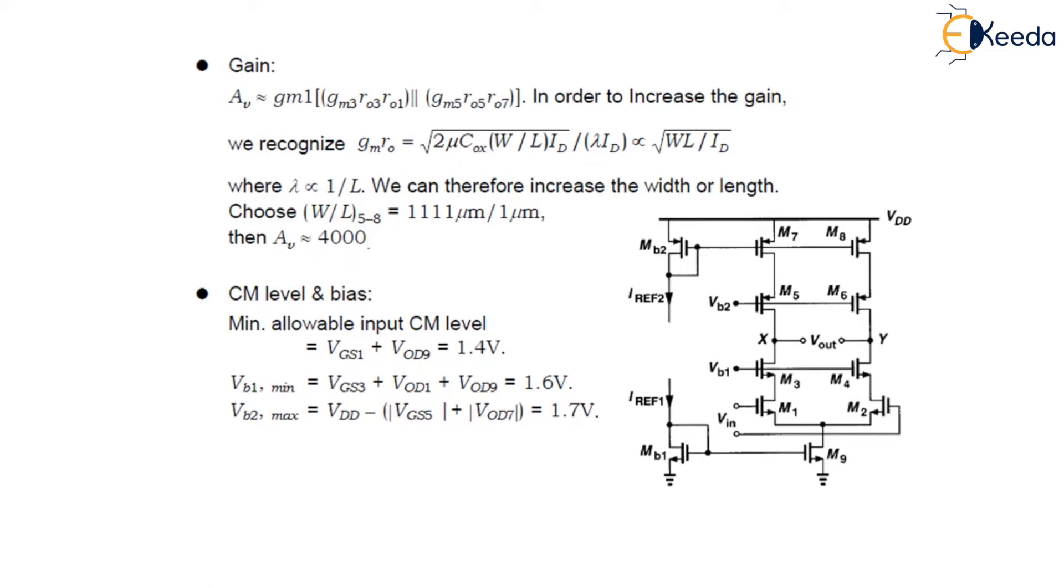Next parameter's common mode performance parameters, CM level and bias voltage. In this, the VB1 and VB2, VB2 bias voltages must be assumed so as to allow maximum output swing.